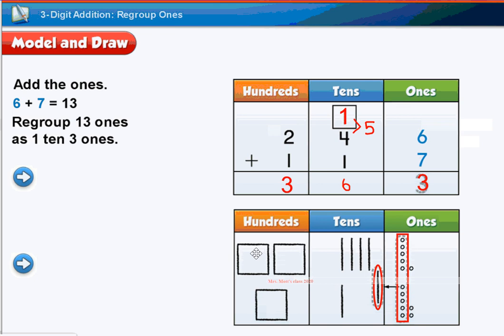And you're going to come over to your hundreds place, and look. You have the 2 plus 1. 2 plus 1, you count them all, and there are 3. So that's showing you here at the bottom, 363.